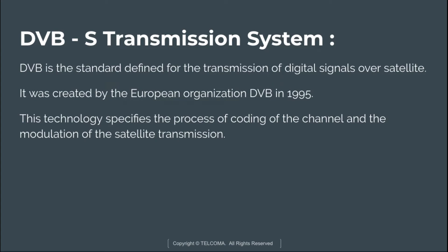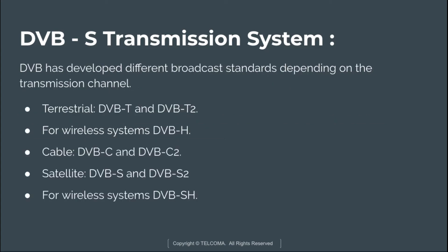DVB has developed different broadcast standards depending upon the transmission channel. For terrestrial use it developed DVB-T and DVB-T2. For wireless terrestrial systems it used DVB-H. For cable systems it used DVB-C and DVB-C2. For satellite transmission it used DVB-S, and for wireless satellite systems it used the DVB-S standard.